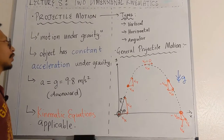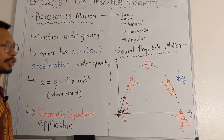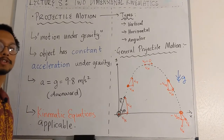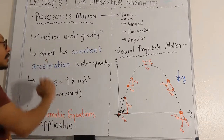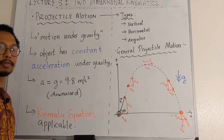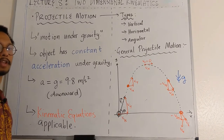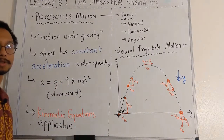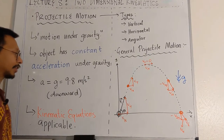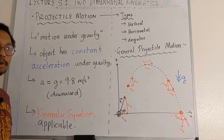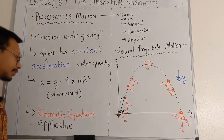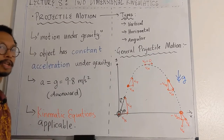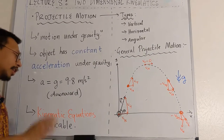Now let's move on to the main topic of this lecture: projectile motion. Projectile motion is the name given to any motion that takes place under one external force, which happens to be gravity and nothing else. An object has constant acceleration under gravity, since gravity accelerates everything at a constant value of g — 9.8 meters per second squared — near the surface of the earth, always directed downwards. Since we are dealing with constant acceleration, all kinematic equations from one-dimensional kinematics apply here as well.